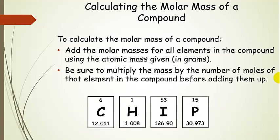What about compounds? Compounds can have a molar mass also. What we're going to do is add the molar masses for all the elements in the compound, but we're going to multiply — for each element — the mass by the number of moles of that element in the compound, before adding them up.